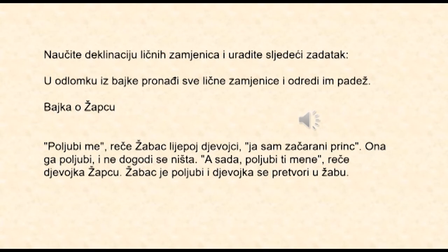U odlomku iz bajke pronađite lične zamjenice i odredite im padež – bajka o žabcu. Poljubi me, reče žabac lijepoj djevojci. Ja sam začarani princ. Ona ga poljubi i ne dogodi se ništa. A sada poljubi i mene, reče djevojka žabcu. Žabac je poljubi i djevojka se pretvori u žabu.